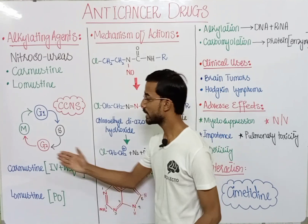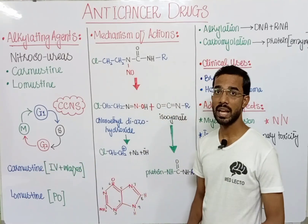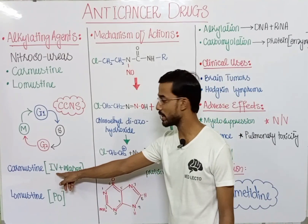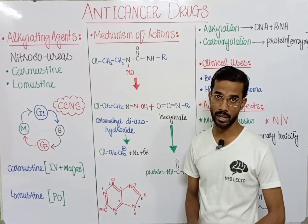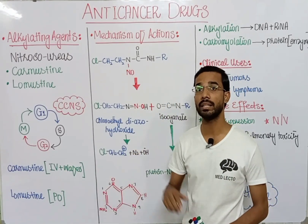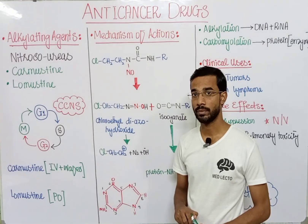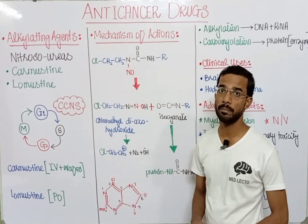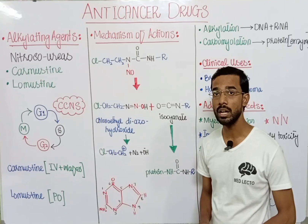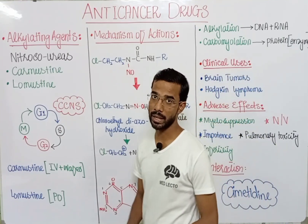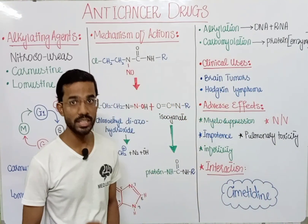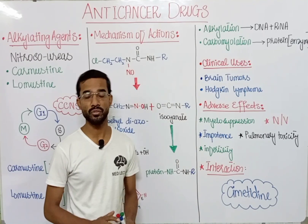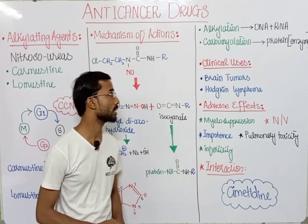Carmustine is actually administered through IV — intravenous — and wafer implantation, which is actually implanted in the brain. Lomustine is actually taken by the oral route. If we discuss the mechanism, we discuss the general mechanism of carmustine and lomustine because there are a lot of similarities between these two drugs.